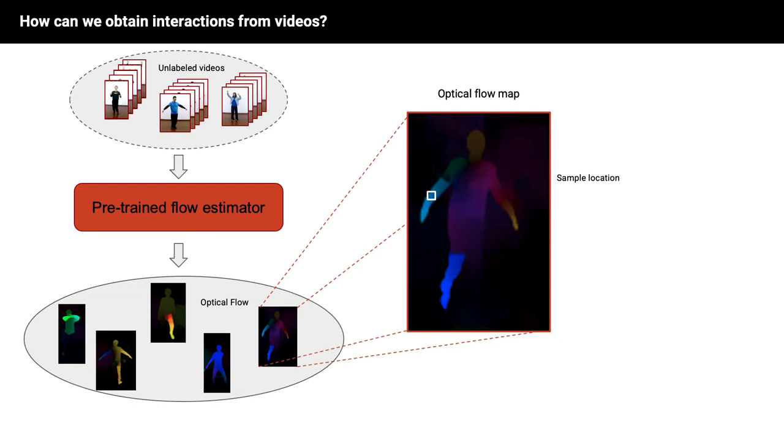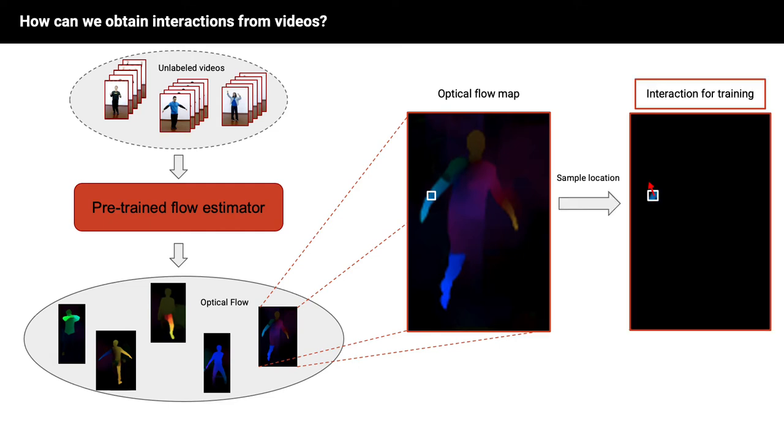we can randomly sample a pixel from those obtaining sufficiently large flow magnitudes and simply use the flow vector at this location to be our train-time interaction. With this, we are all set for training the model. And here is how we do it.